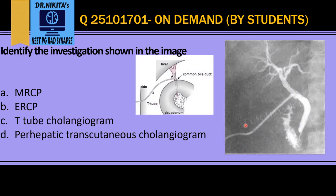Next, this is a T-tube cholangiogram. A T-tube is inserted from the skin surface into the CBD. The horizontal limb of the T goes into the CBD. So you would see a catheter — that is the T-tube — with the limbs going into the CBD. That is a T-tube cholangiogram, which is imaging the CBD.